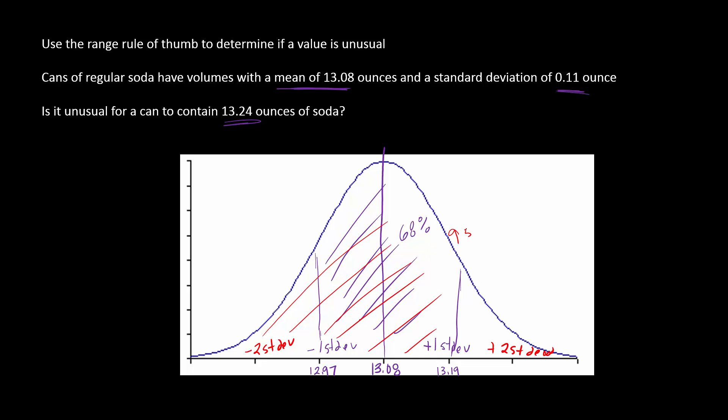The minimum usual value then would be 13.08 minus two times the standard deviation, which would give you 12.86. And then the maximum would be the same thing, 13.08.